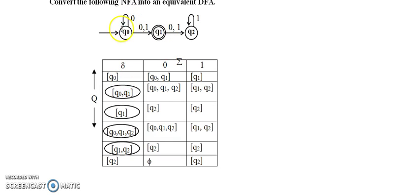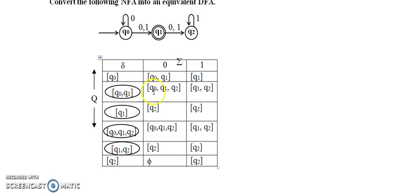Q0 was my current state. Other than Q0, whatever I am getting will be a new state. Now I have to write the transition function for {Q0, Q1} and {Q1} also. For {Q0, Q1} with input 0: delta(Q0, 0) ∪ delta(Q1, 0) = {Q0, Q1} ∪ {Q2} = {Q0, Q1, Q2}. For {Q0, Q1} with input 1: delta(Q0, 1) ∪ delta(Q1, 1) = Q1 ∪ Q2 = {Q1, Q2}. These two states are also new, so I have to write the transition function for {Q0, Q1, Q2} and {Q1, Q2}.